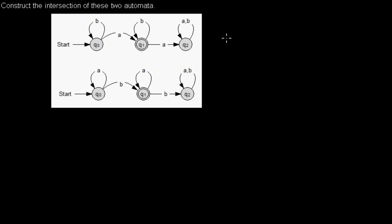I'd like to show you how to construct the intersection of two deterministic finite automata. In the case of a language, the intersection means that we want to keep just the words that are in both languages.